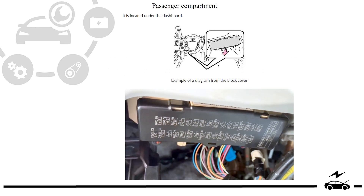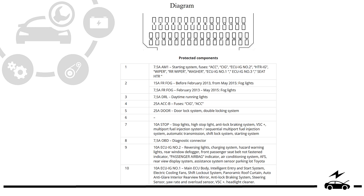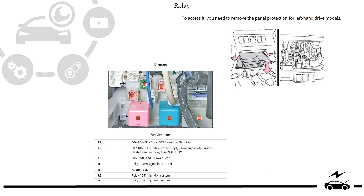Passenger compartment fuse box: location, photo, diagram, protected components. Relay box: location, diagram, assignment.